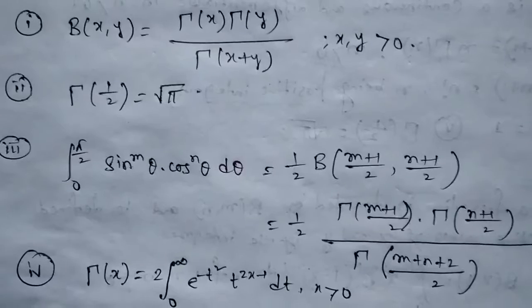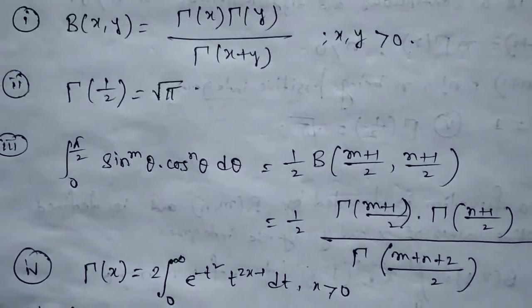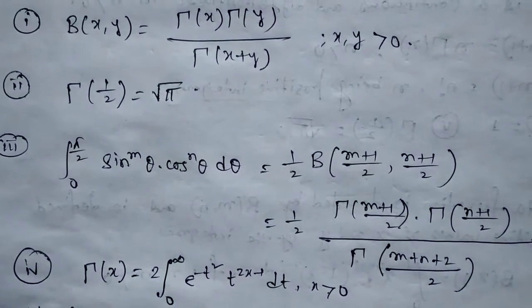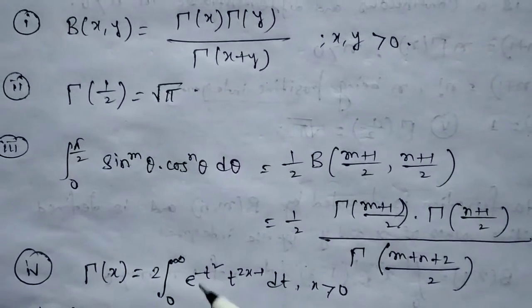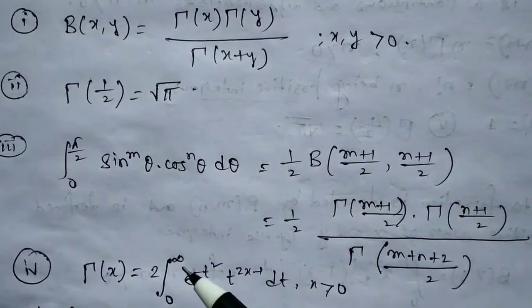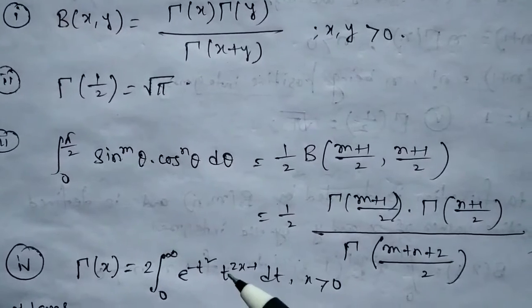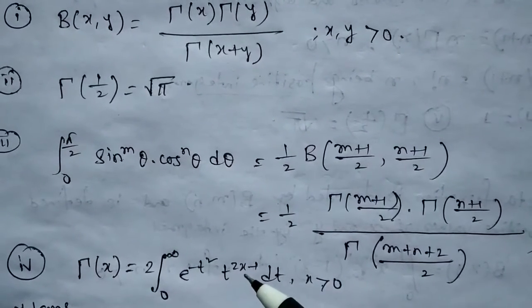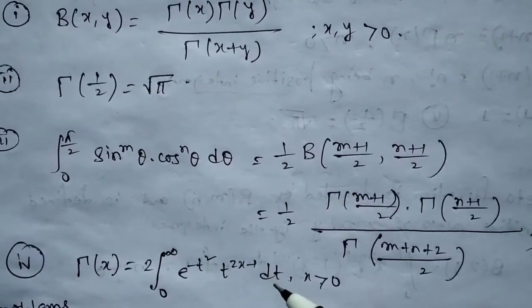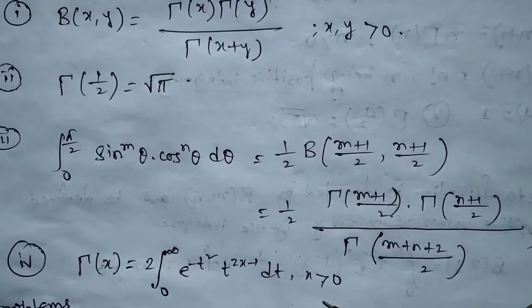Relation 4: Γ(x) = 2 · integration from 0 to infinity of e^(−t²) · t^(2x−1) dt, for x greater than 0.